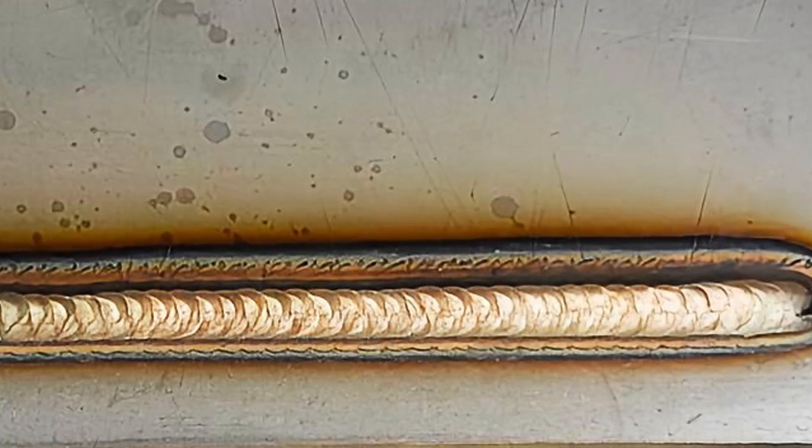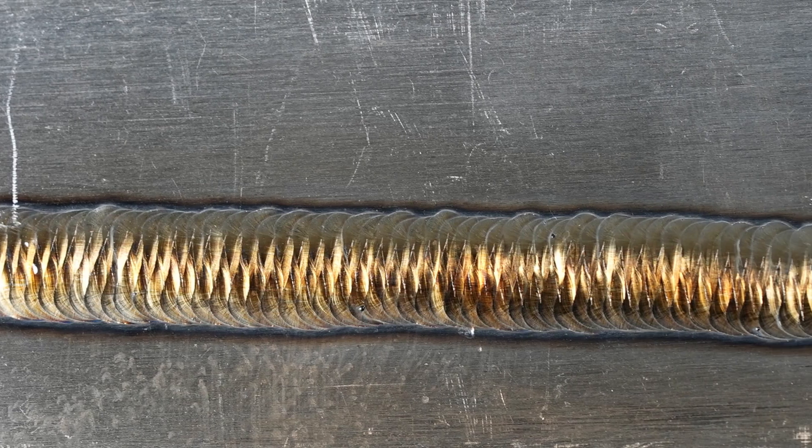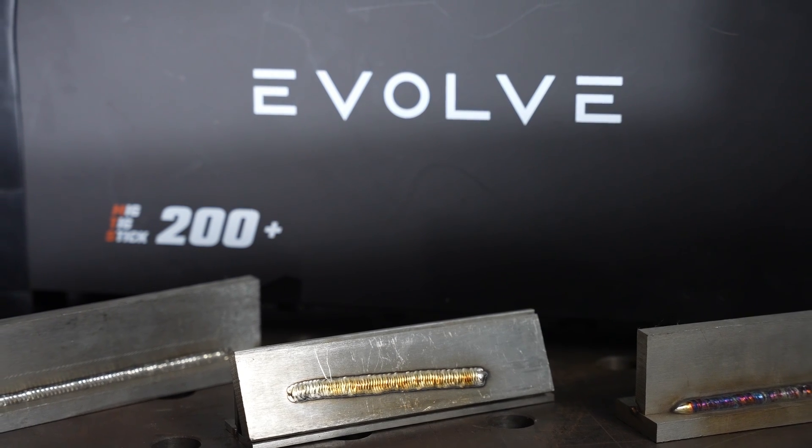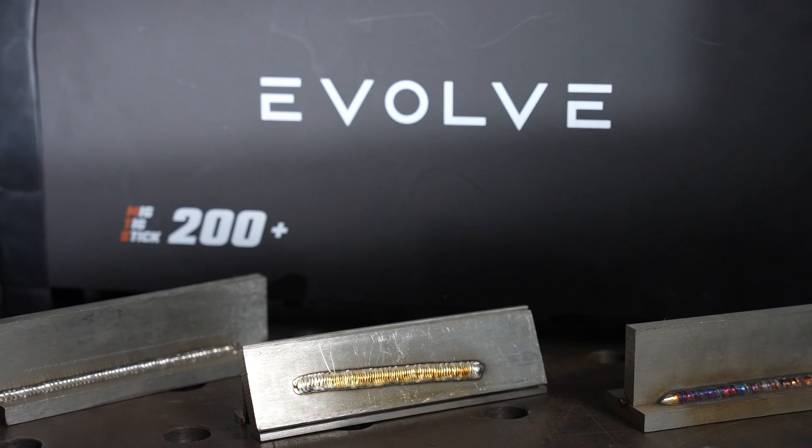By refining your TIG welding techniques and precisely controlling the welding parameters, you can create beautiful golden weld seams on stainless steel. Have you ever achieved golden TIG welds on stainless steel? What's your secret? Please share your insights and experiences in the comments below.